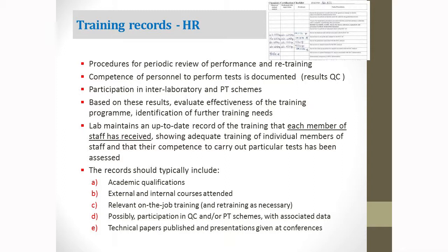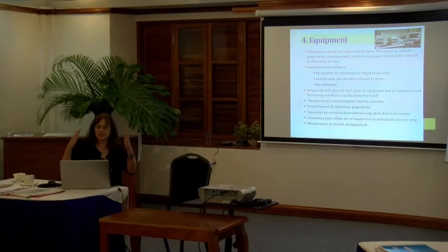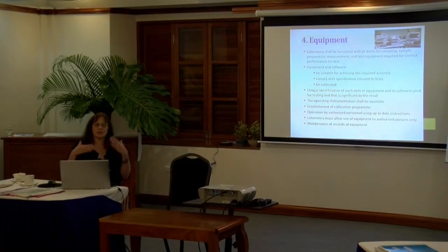Training records are checked during accreditation as a very important resource. Records for each person should include qualification, courses attended, on-the-job training, and participation in PT or quality control. What ISO wants is a procedure: you evaluate where your personnel are, what the needs are, and come up with a training plan for the next year.